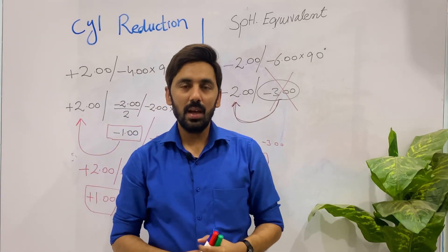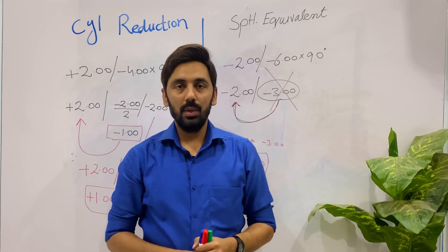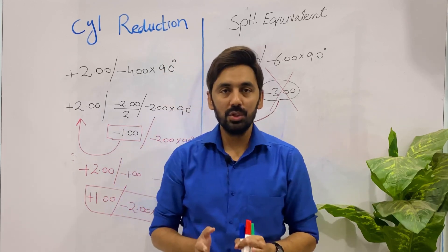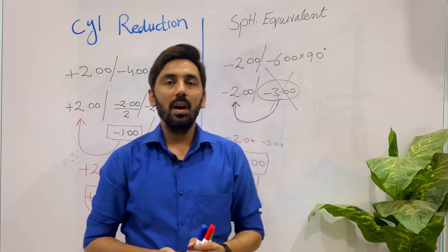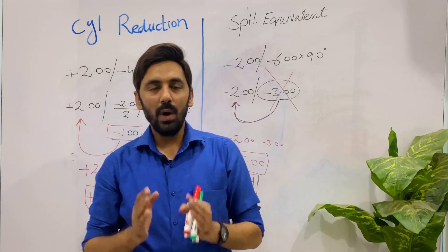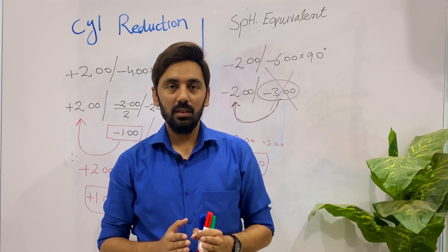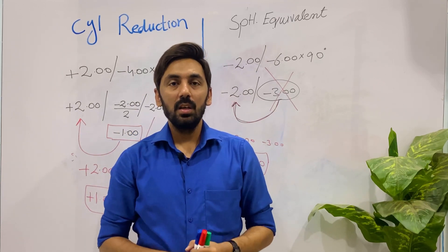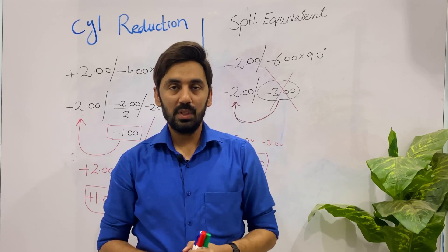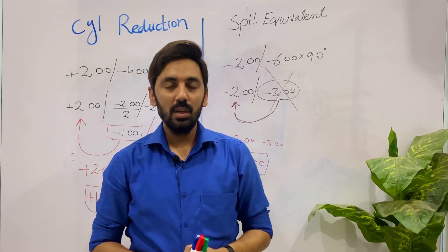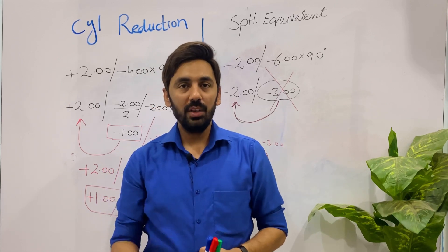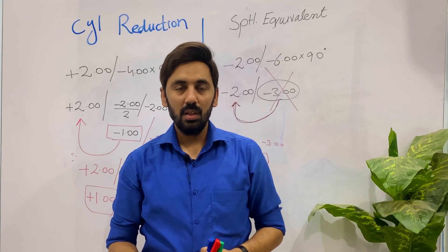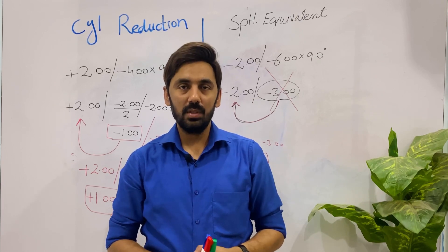So these are the two procedures: cylindrical reduction and spherical equivalent. We have compared both procedures — both are used to prevent the patient from the symptomatic effects of a high cylinder prescription. We have discussed their indications, similarities, and differences.